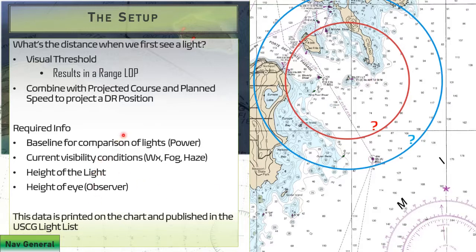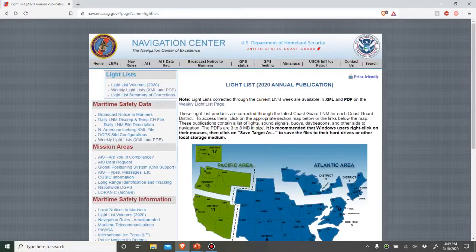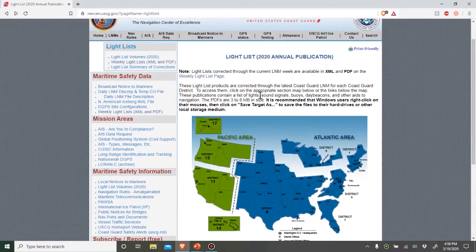That's two pieces of information: our height of light and the baseline measurement of range. The other place you can find this information is on the U.S. Coast Guard light list.